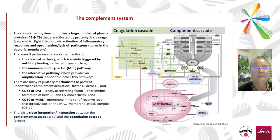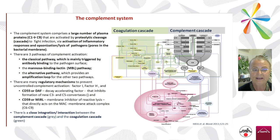There are three main pathways of complement: the classic pathway, which is generally triggered by antibody binding; the mannose-binding lectin pathway; and the alternative pathway, which is an amplification loop for the other two. There are also many regulatory mechanisms to prevent uncontrolled complement activation.